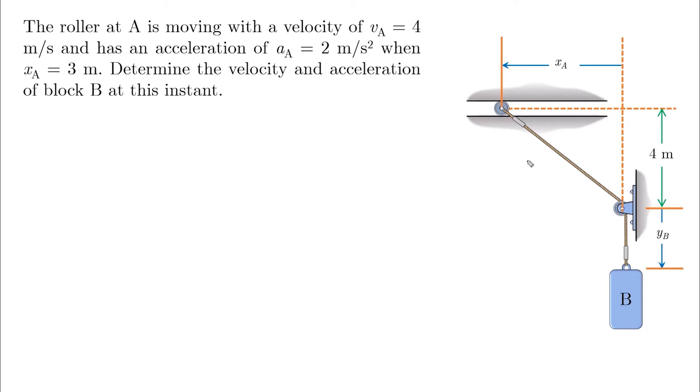Finding the relationship between A and B starts by defining the length of the cable. This portion here is the square root of xA squared plus 4 squared, and this portion here is yB. If we add them together, we will get the total length.